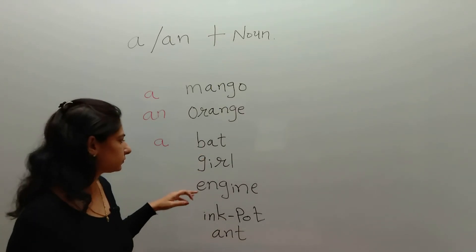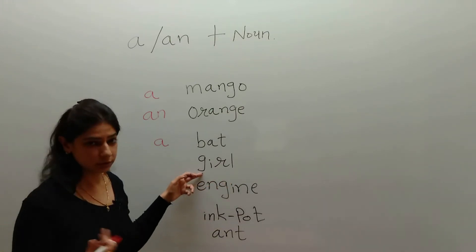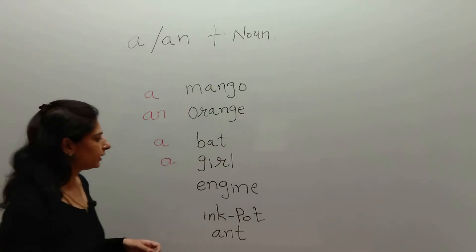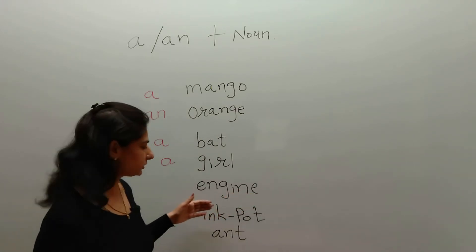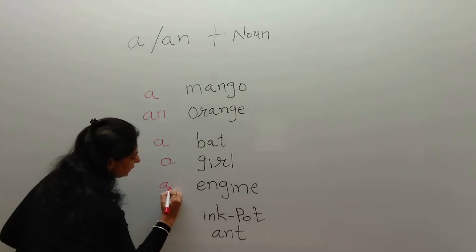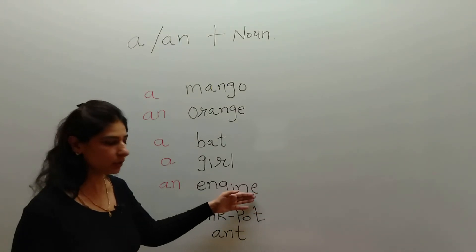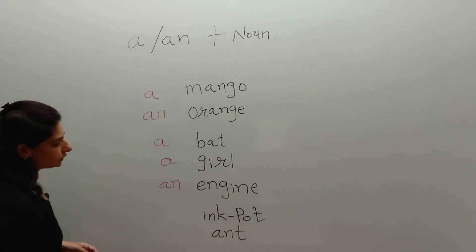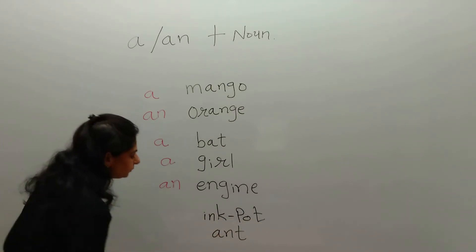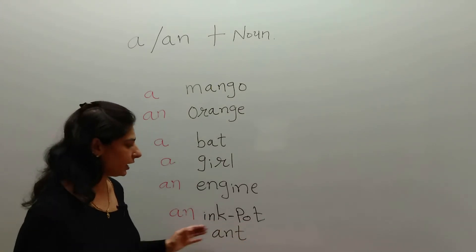The word 'bat' starts with a B sound — a consonant — so we say a bat. 'Girl' starts with a G sound — a consonant — so we say a girl. 'Engine' starts with an E sound — a vowel — so we say an engine. 'Ink pot' starts with an I sound — a vowel — so we say an ink pot.